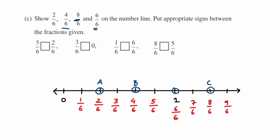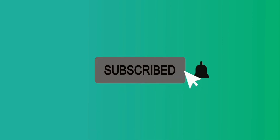The last value is 6/6, which equals one, and is already marked on the number line. Now for the comparison signs: since these are like fractions, we compare numerators. For example, 5/6 > 3/6, and 3/6 > 0. Also, 6/6 equals one, so one > 1/6. And 8/6 > 5/6 since eight is greater than five. That completes the problem.